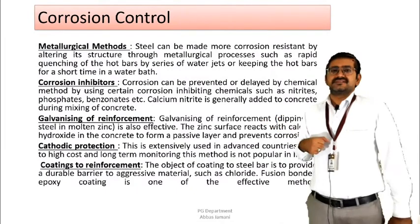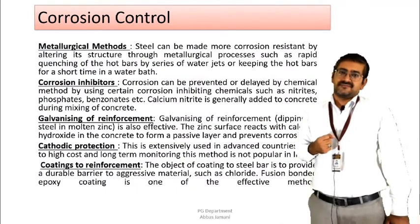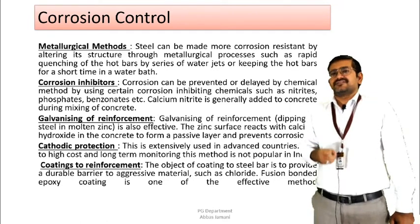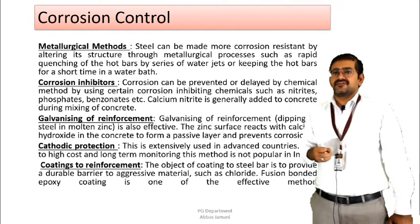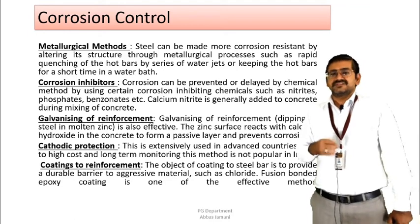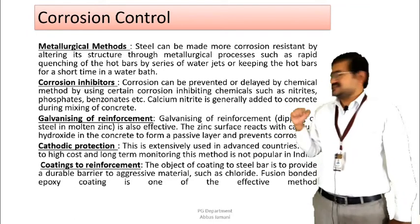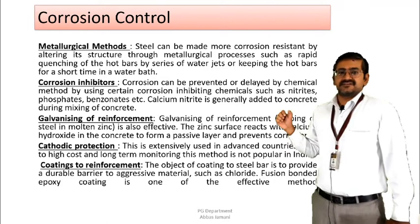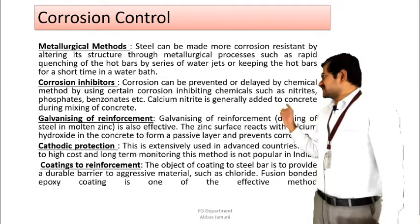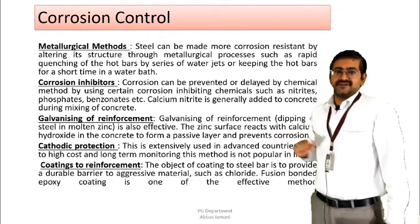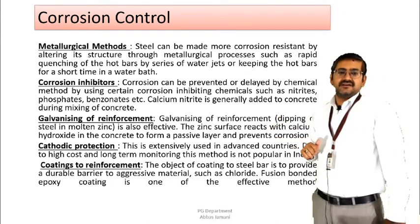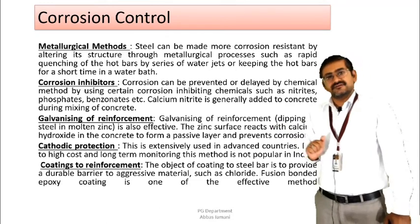Now the question is: how do we control this corrosion? If we talk about specific engineering methods that can be applied to control the process of corrosion, we have 5 options. The first option is the metallurgical method, second is corrosion inhibitor, third is galvanizing of reinforcement, fourth is cathodic protection, and fifth is the coating of reinforcement.